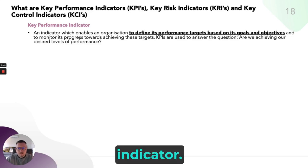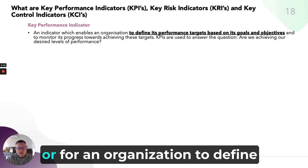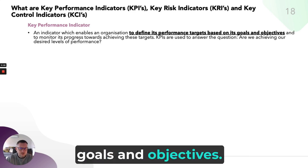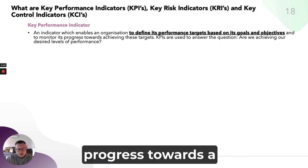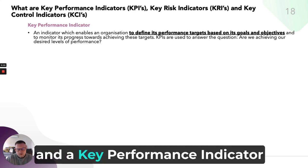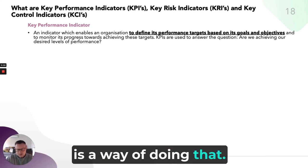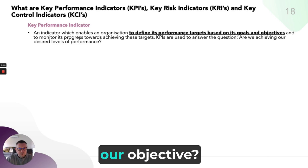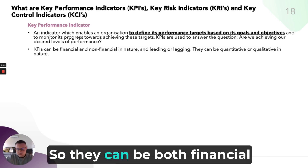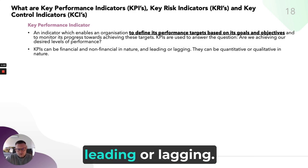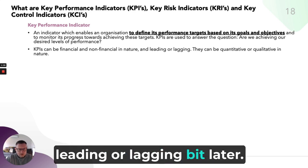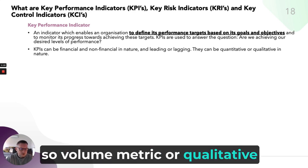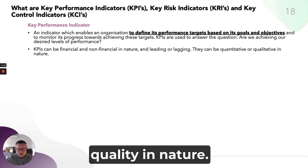The first one: Key Performance Indicator. This is an indicator for an organisation to define its performance targets, goals and objectives — a way of monitoring progress towards a desired outcome. In short, it asks: are we achieving the desired level of performance against our objectives? KPIs can be both financial and non-financial, leading or lagging, or quantitative — volume metric — or qualitative in nature.